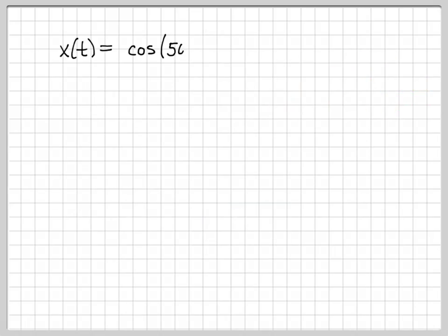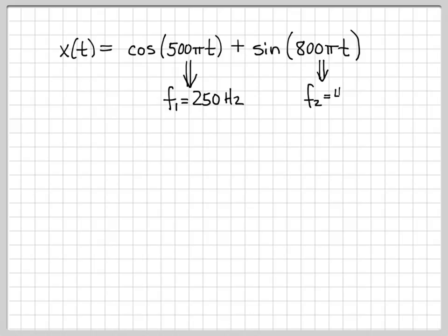This problem is actually easier to work than this because we really didn't have to compute the Fourier transform. Just by looking at this equation in the time domain, it's very easy to tell what the frequency content is. Just by looking at the cosine term, we know that is a cosine at 250 hertz. Looking at the sinusoid in the time domain, we know that is a frequency component of 400 hertz.